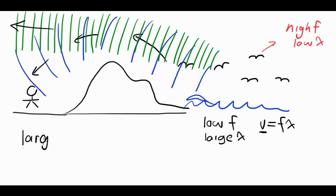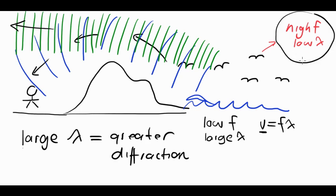Large wavelength equals greater diffraction. That's probably the most important concept you need to take away from this. Whereas, compare that to the seagulls. Seagulls are a high frequency, which means a low wavelength, and a lower wavelength will mean less diffraction around the hill, less bending.